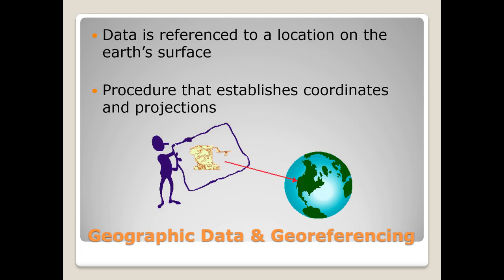One of the questions that I'm hoping you're asking yourself is: how does all this data that I add to my map line up with each other? How does it know where to go on the map? The reason it is able to position itself on the map correctly is because it has a coordinate system attached to it, which tells it where to position itself on the Earth's surface. That's a key concept in GIS — data is geo-referenced to specific locations on the Earth's surface.